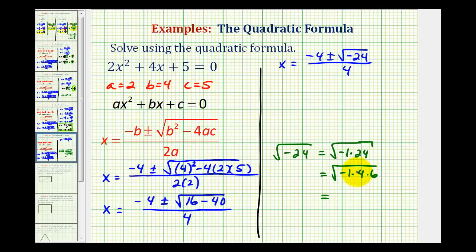So this simplifies to the square root of 4, which is 2, the square root of negative 1, which is i, and then we have the square root of 6. So we have x equals negative 4 plus or minus 2i√6 divided by 4.